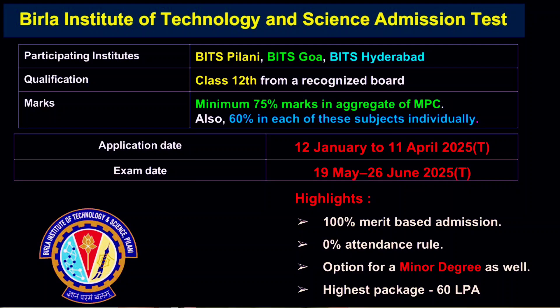Here there is a 0% attendance rule, and the marking scheme is plus 1 and minus 1. If you add any subject, it will be beneficial. You will also get a minor degree. The highest placement package is 60 lakhs per annum and the average package is above 20 lakhs. The fees are manageable and you can get a loan. You will get a seat at this college, which is a great choice for IIT aspirants and parents.